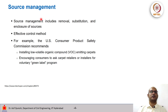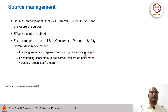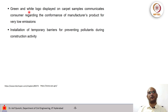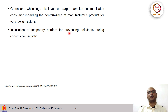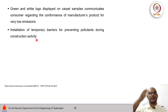Source management generally includes removal, substitution and enclosure of sources. It is actually an effective control method. For example, the US Consumer Product Safety Commission recommended installing low VOC emitting carpets and encouraged consumers to ask carpet retailers or installers for a voluntary green label program. A green and white logo displayed on carpet could communicate the conformance of a manufacturer's product for low emissions. Another option was installation of temporary barriers for preventing pollutants during construction activity, because outdoor pollutants could come inside through windows, and a temporary barrier would reduce transfer of pollutants indoors.